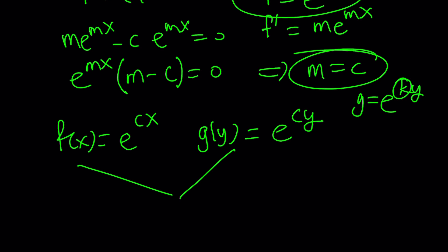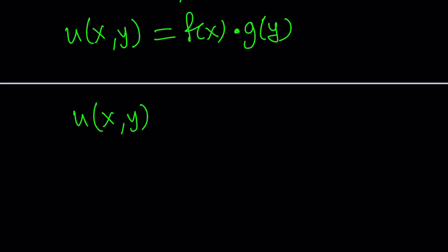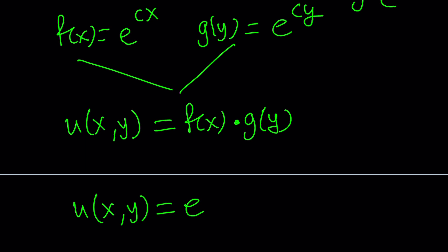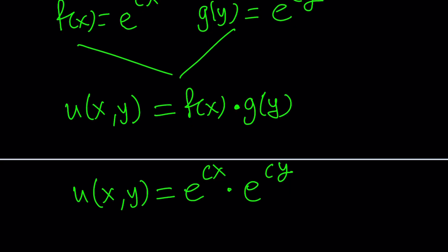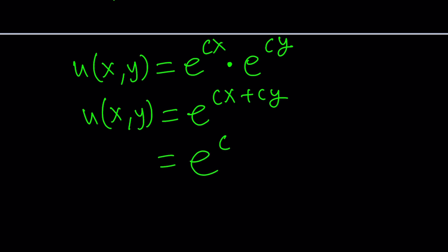Because remember, u, the variable u, was made up of two pieces, which is a product of two functions, one of which is f of x, which is a function of x, and the other one being a function of y only. So since u is f times g, now we can go ahead and plug it in, substitute, and that's going to give us a solution for u, which is e to the power cx times e to the power c y. We can go ahead and combine these things, because when you multiply these two exponentials, you're going to add the exponents, and that's going to give us e to the power c times x plus c times y, which you can also factor out, c times x plus y.